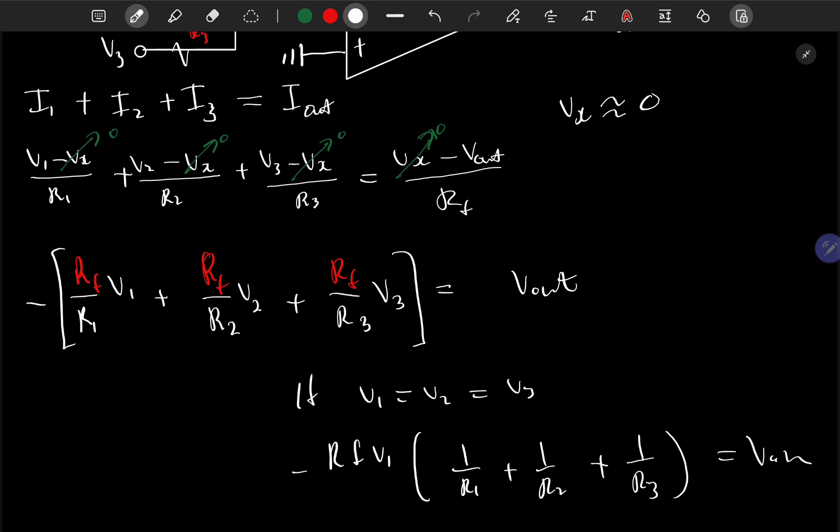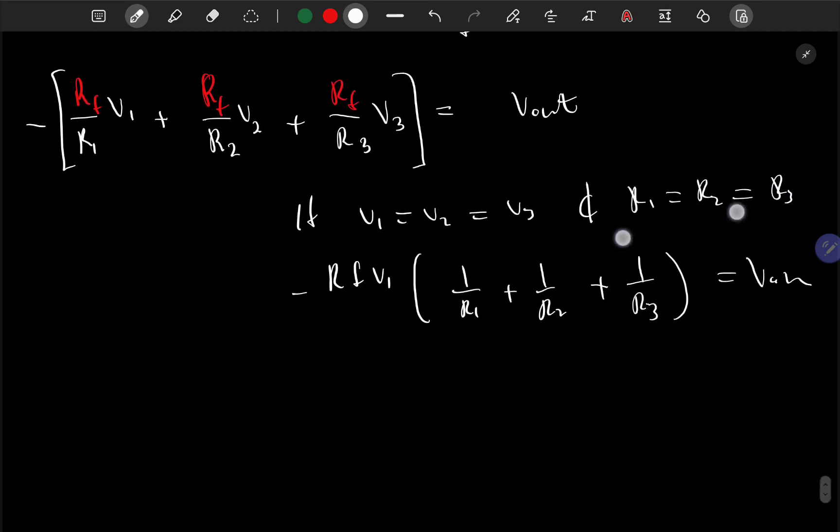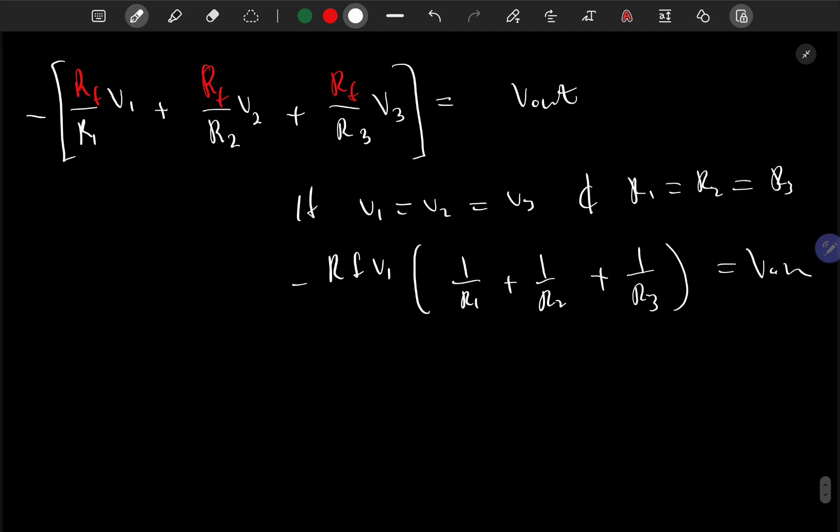Someone might say, what if also r1 equals r2 and equals r3? Again we would have been able to factor it out: Rf v1 all over r1 equals vout.